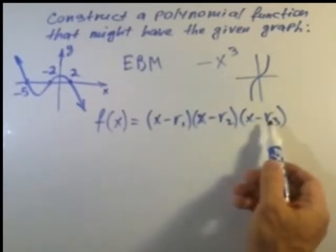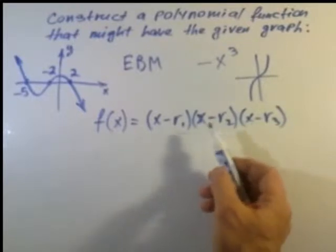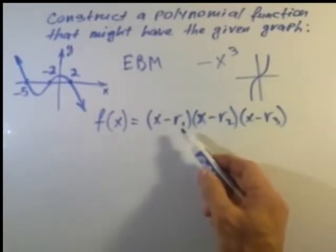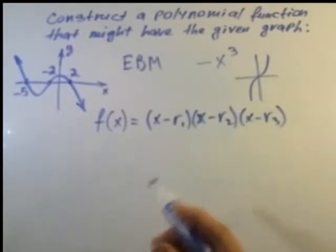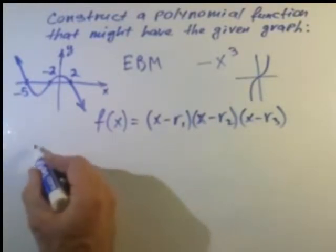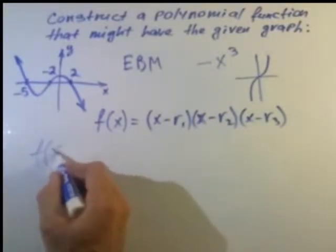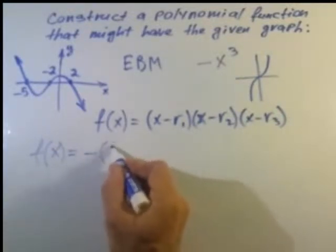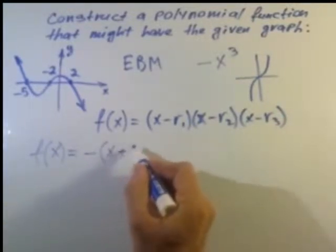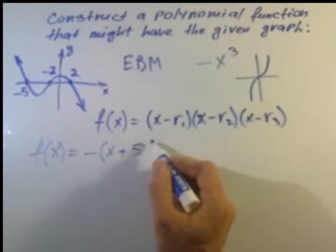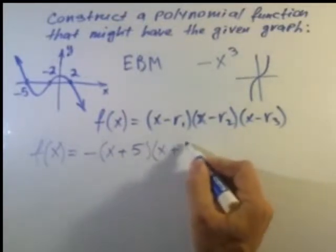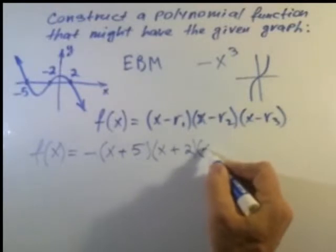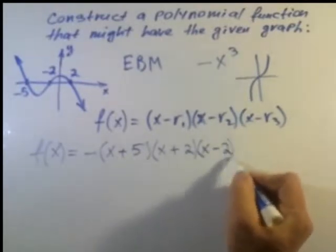Where r are the intercepts. When we substitute numbers for r's we get this equation. Don't forget the negative sign: negative (x plus 5)(x plus 2)(x minus 2).